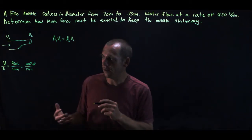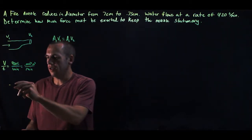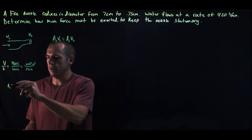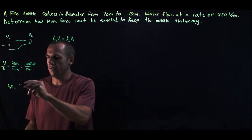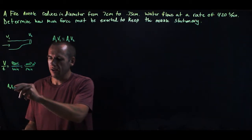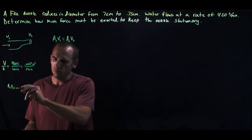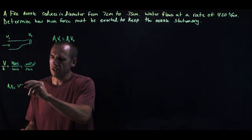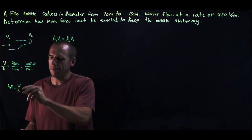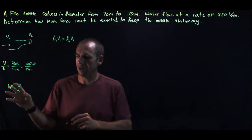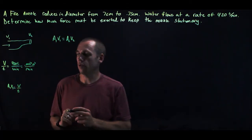And we further know that A1 times V1 is equal to the volume rate of flow. So area times velocity is volume per time. And you'll notice I'm not putting a subscript on that because the volume rate of flow is constant.